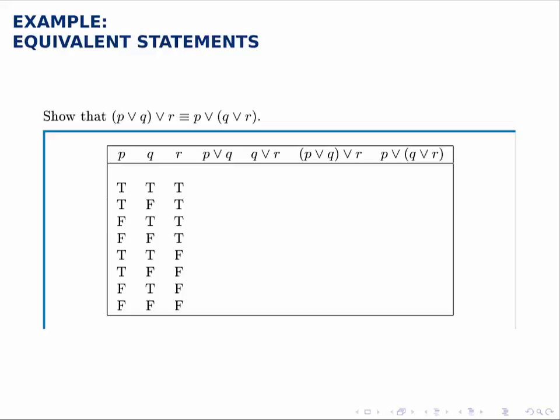This is an example of what we call an associative rule, similar to how in algebra we have things like A plus B plus C is the same as A plus B plus C, which says that grouping doesn't matter when we add things together.